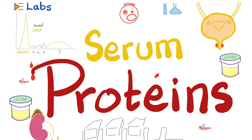Hey guys, it's Medicosis Perfectus, where medicine makes perfect sense. Let's continue our labs playlist. In previous videos, we talked about beta-2 microglobulin, the true acetylcholinesterase versus the pseudo acetylcholinesterase, anti-acetylcholine receptor antibodies, serum potassium and urine potassium, serum chloride and urine chloride, serum uric acid and urinary uric acid. Today we'll talk about serum proteins — albumins and globulins — and in the next video we'll talk about urine proteins.